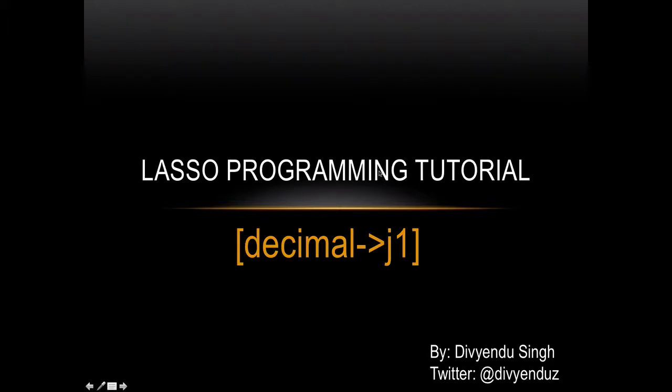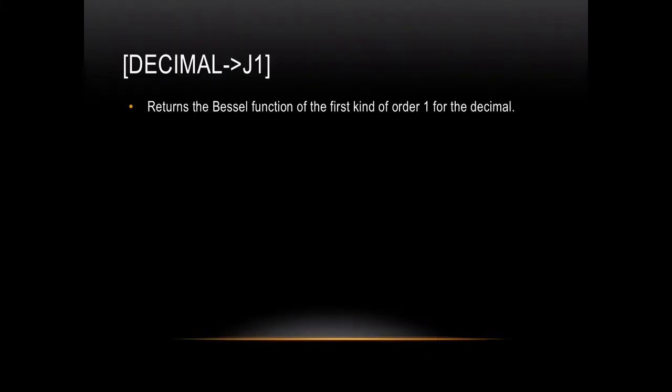In this tutorial I want to talk about the j1 function of the decimal object in Lasso programming. This function returns the Bessel's function of the first kind of order 1 for the decimal.